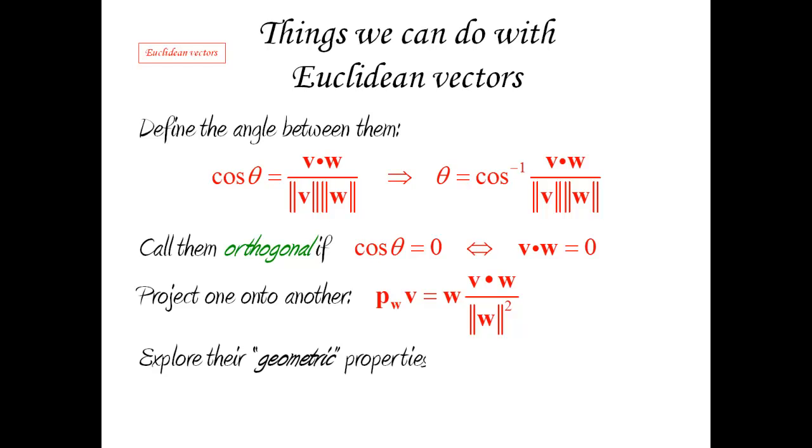What else can we do? We can explore the geometric—and I'm putting that in quotes, because really, these not being geometric vectors, we can't really talk about geometric properties—but there is a whole bunch of properties that come from geometry for geometric vectors that can be easily extended to Euclidean vectors, and we're going to look at some of those in the class.